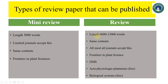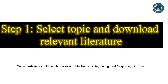For a full review article, it depends on how intelligently and smartly you design your review, and almost all journals accept this format. Mini reviews are only accepted by some journals — for example, Frontiers in Plant Science. Journals listed for plant sciences include Frontiers in Plant Science and IJMS (International Journal of Molecular Sciences), which are usually paid. Free-to-publish journals include Acta Physiologiae Plantarum and Biological Systems, though their review process tends to be longer.